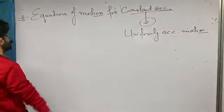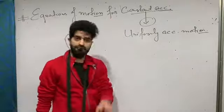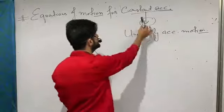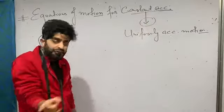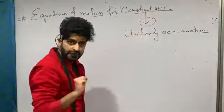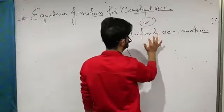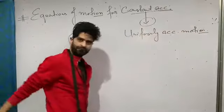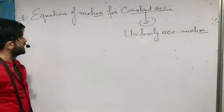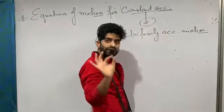Now we are going to derive the equations of motion. This is for a special case: the particle's acceleration must be constant. When a particle moves with a constant acceleration, it is called uniformly accelerated motion. The equations of motion I will derive are only for a particle moving with constant acceleration.